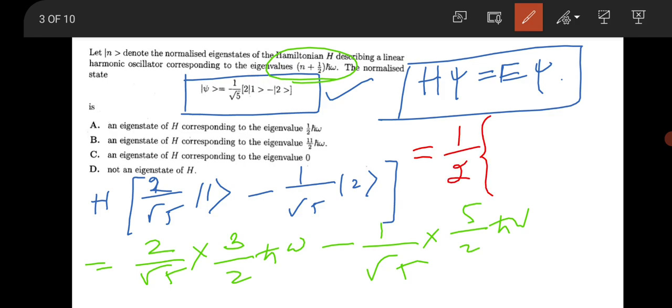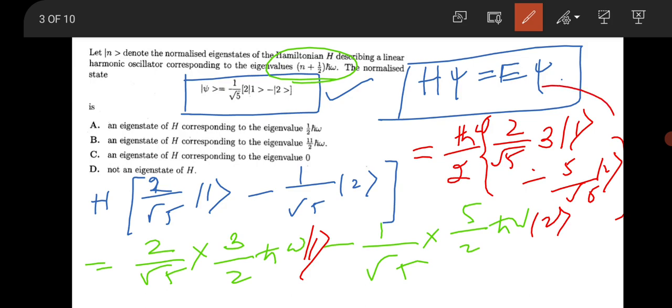It will be 2/√5 times 3 times ℏω also taken common, state 1 will be there and state 2 will be there. So 3 times first state minus 5/√5 second state. This is not the eigenfunction, the state changes.